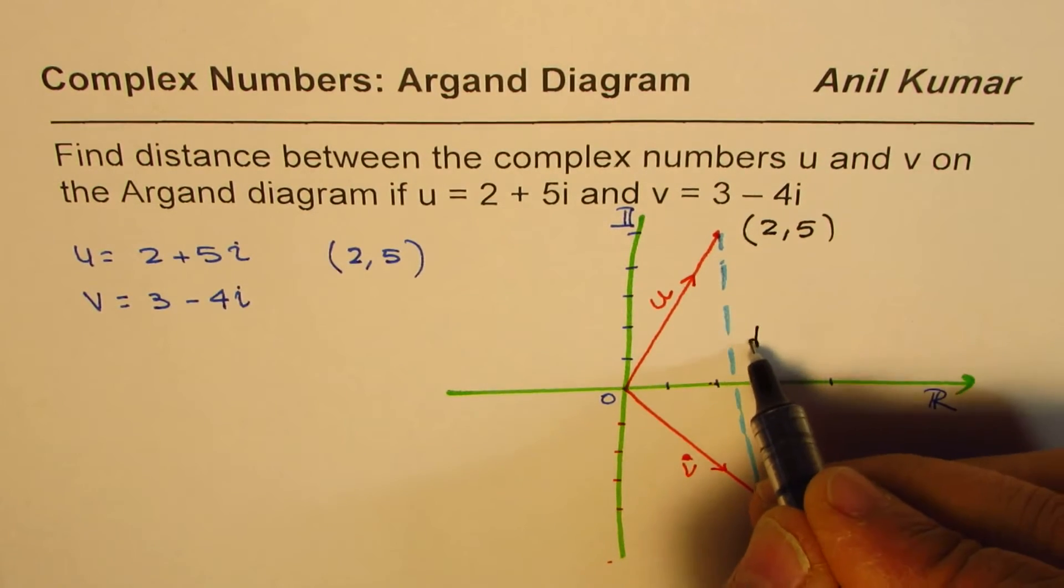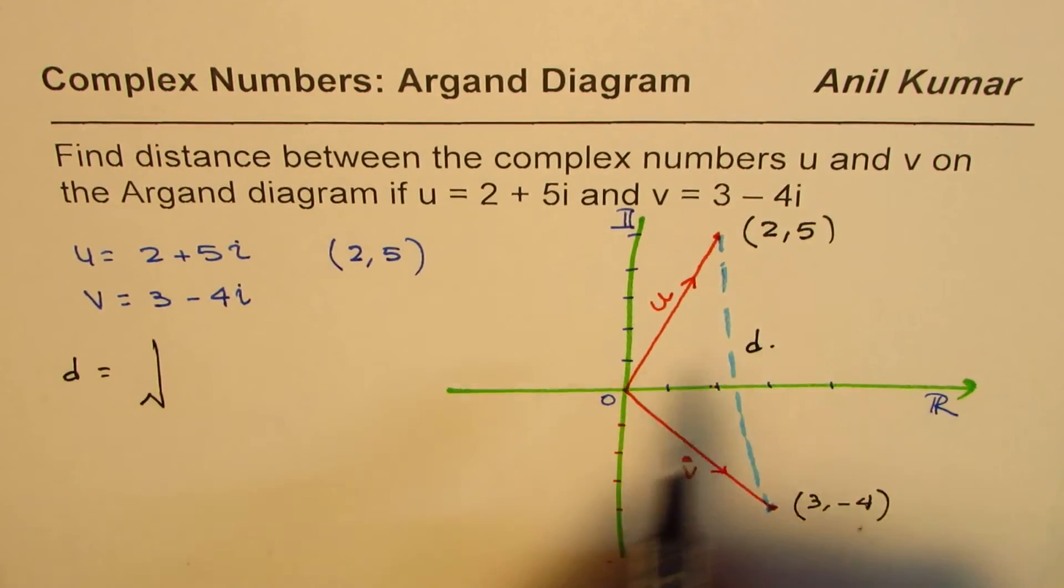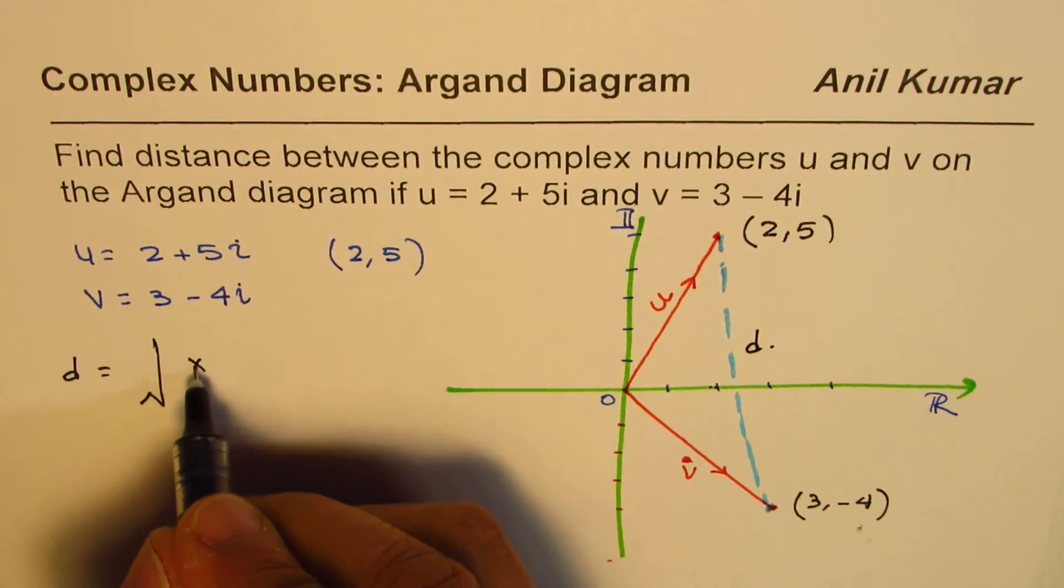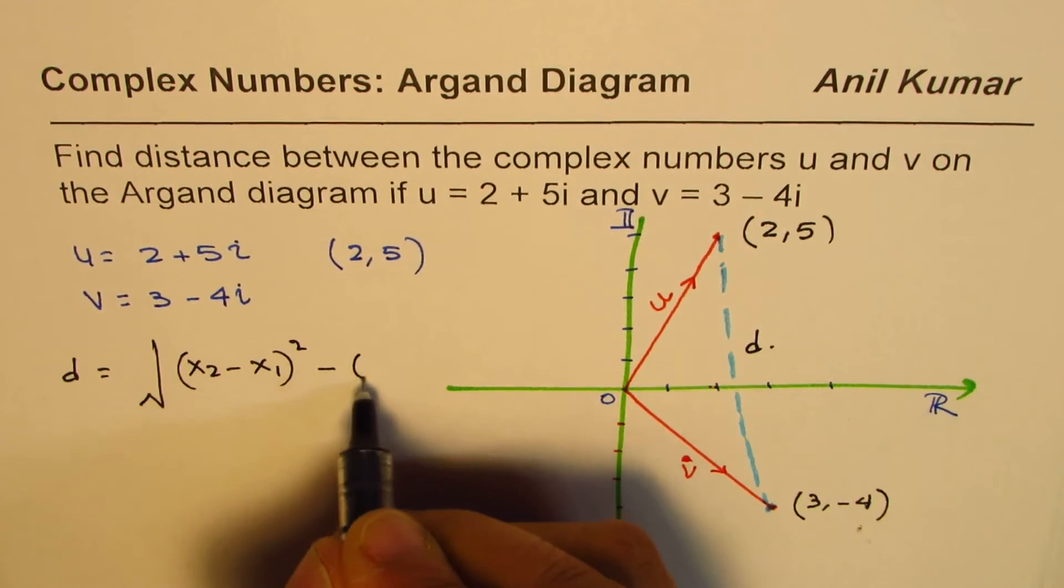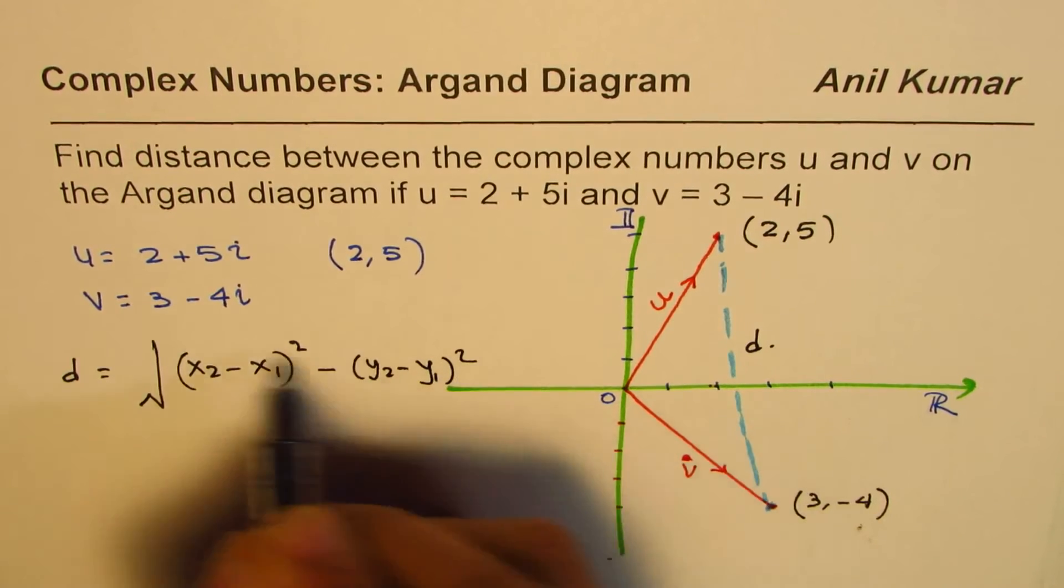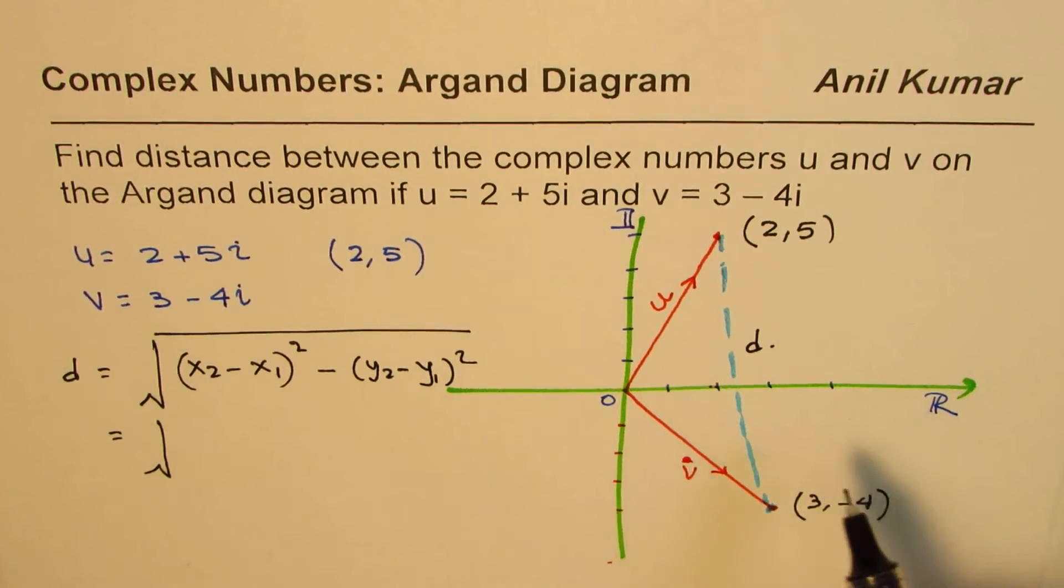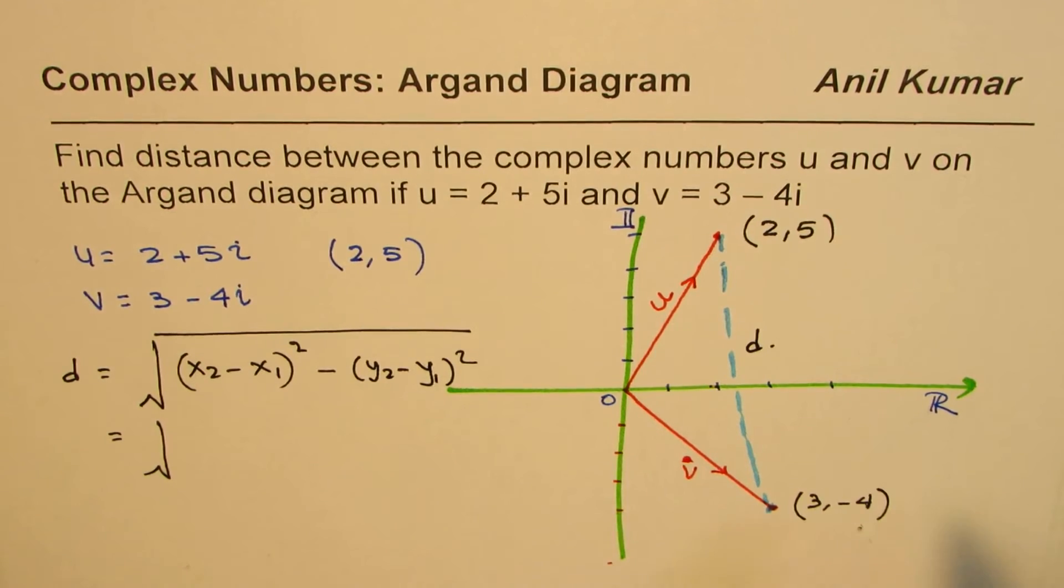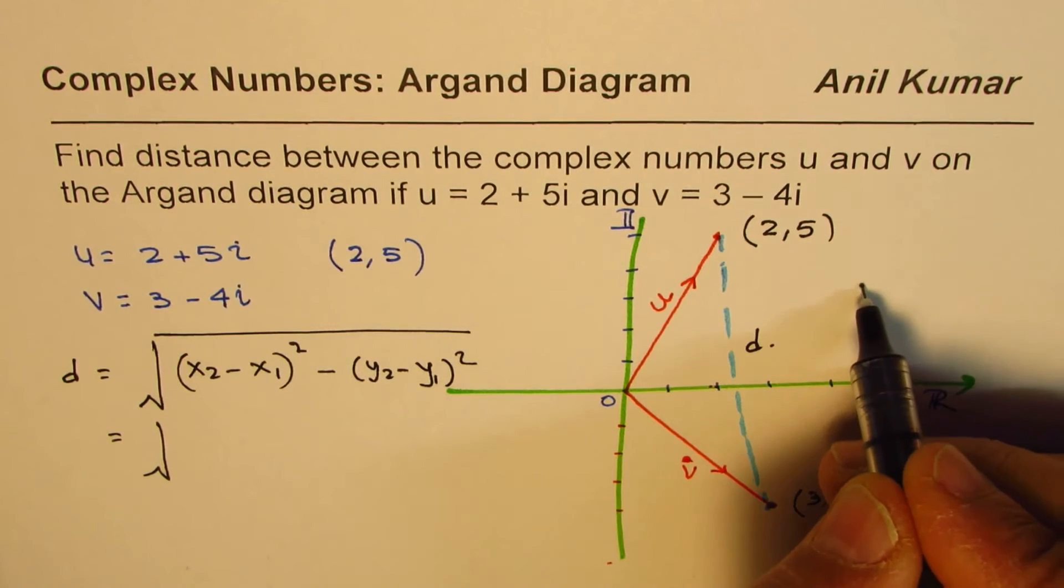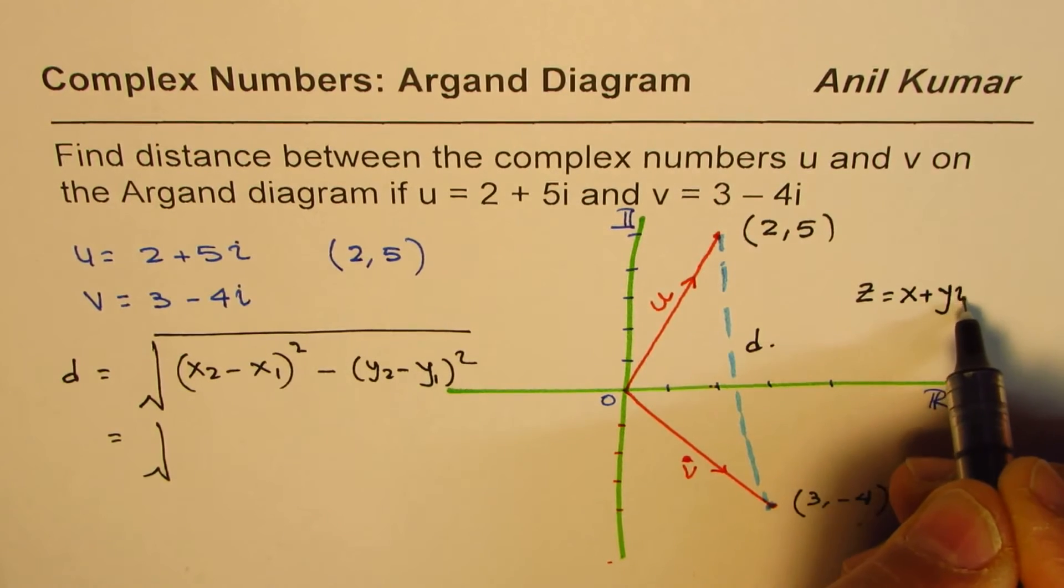So distance d in this case should be equal to square root of x2 minus x1, y2 minus y1 whole square. In this particular case, the difference in two real values, the x and y's are real and imaginary values for us. We are writing that the vector z equals x plus yi in this case.